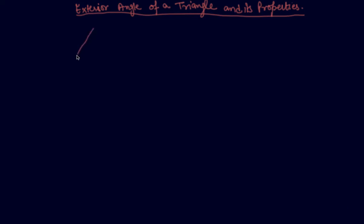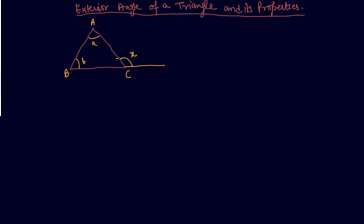So let me draw a triangle first. This is a triangle, and what we are going to discuss in this lecture is the exterior angle of a triangle. Let's say this is triangle A, B, C and if I say that this is the exterior angle, let's say this is X. These are the angles A, B, and small c. This angle X is called the exterior angle of a triangle.